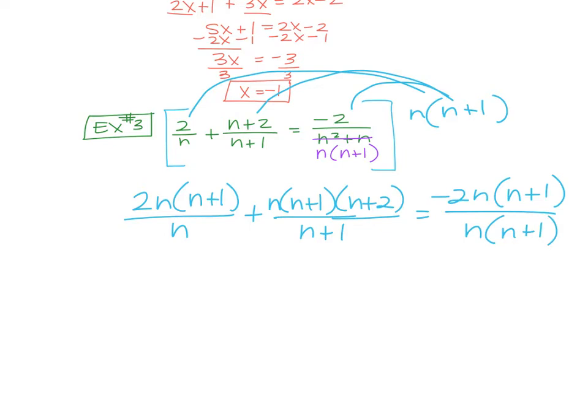And that equals, and now here, negative 2 times n times n plus 1 over n times n plus 1. Again, if you want to foil or distribute, you're welcome to, but man, are you going to have a lot more work to do. So what do we do from here? Start slashing. Start simplifying. So n over n, n plus 1 over n plus 1, n over n, and n plus 1 over n plus 1.